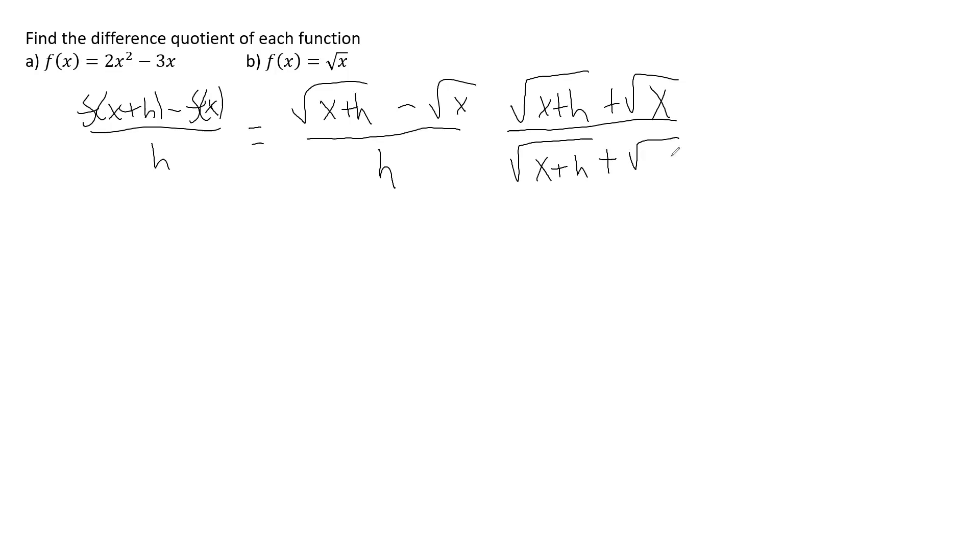Conjugate is when you have a binomial, and the conjugate of the binomial is you just change the sign in between the two of them. Now, the denominator we're just going to leave is h times square root of x plus h plus square root of x.